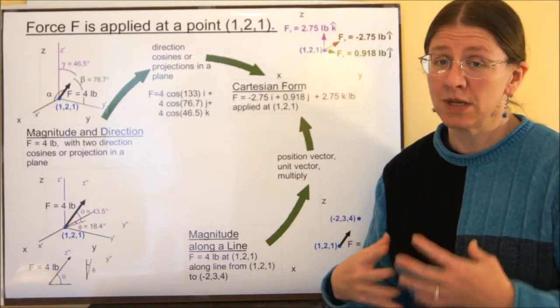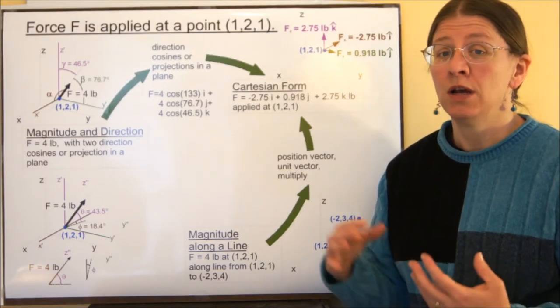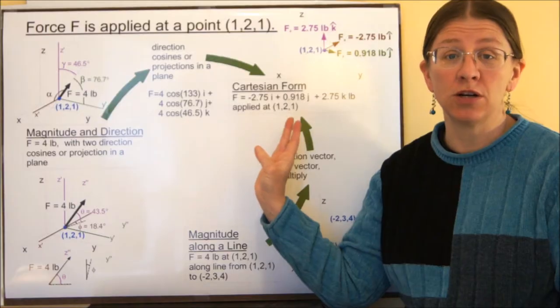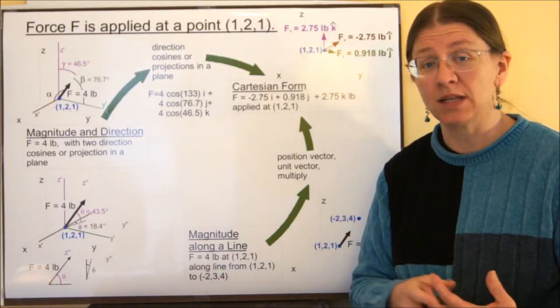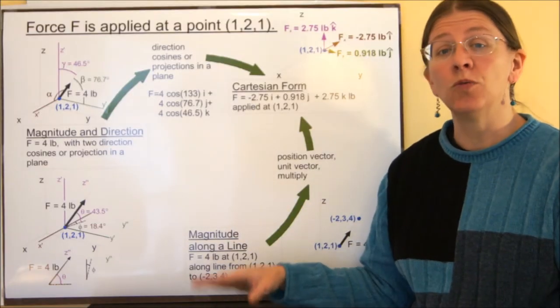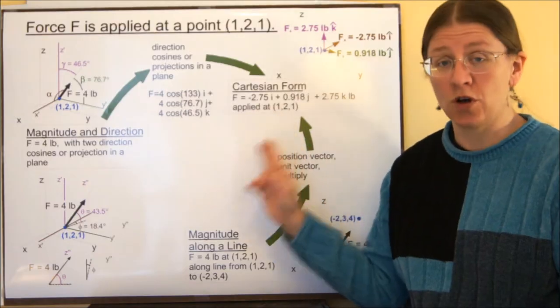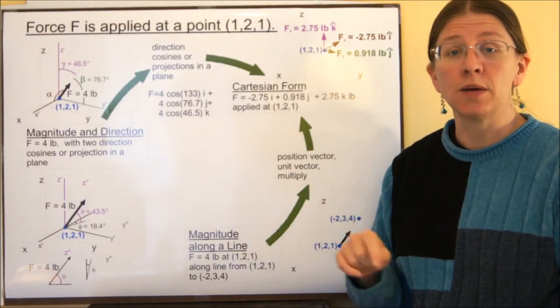In two dimensions, you will sometimes add vectors without changing them into Cartesian form. We use the law of sines and cosines. In three dimensions, in general, what we're going to do is we're always going to move to Cartesian form.